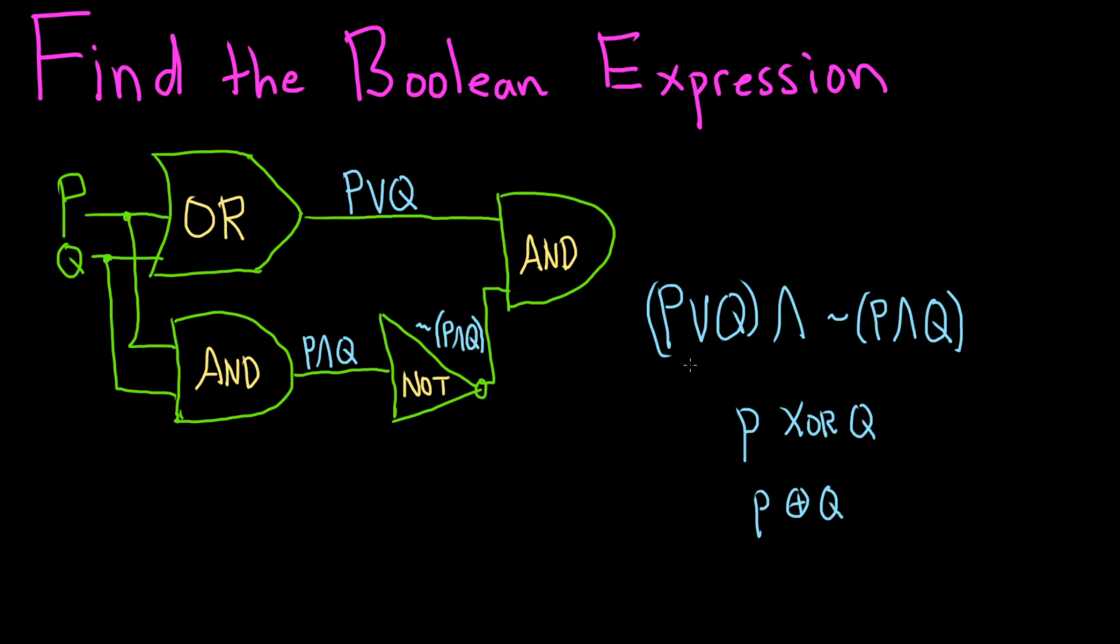And intuitively here's why. This is saying that P or Q and not P and Q. So it's saying P is true or Q is true or both are true, but they're not both true. In other words, exactly one of P Q is true.